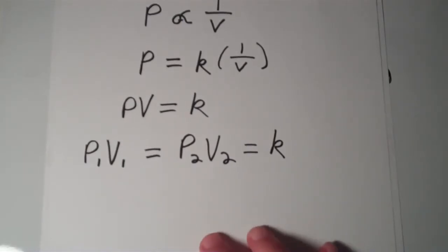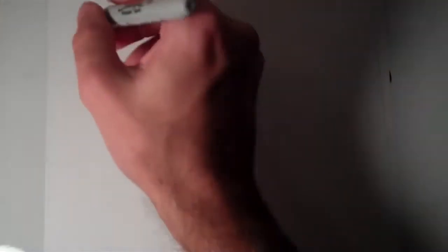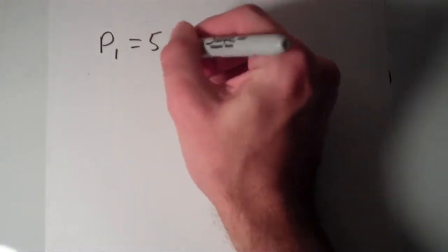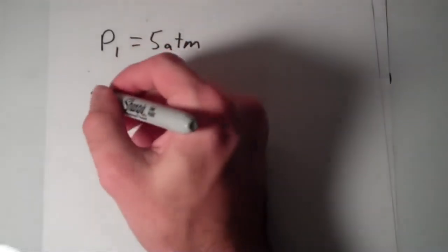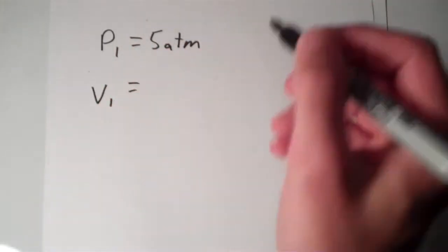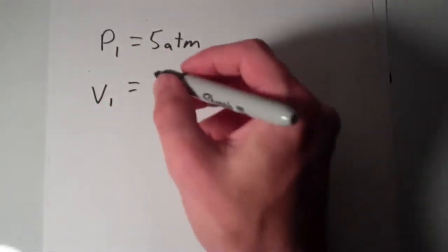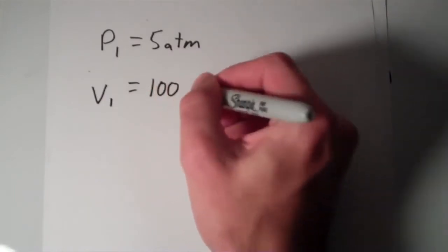So suppose I have a gas. I'm just going to say that the initial pressure of this gas is 5 atmospheres. And suppose the volume of the gas when it's at 5 atmospheres is 100 liters.